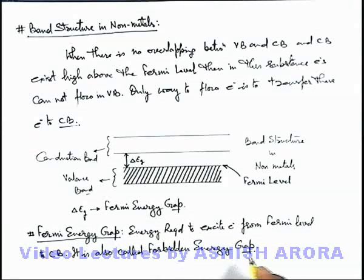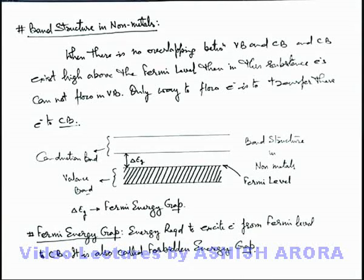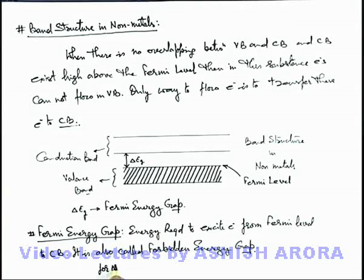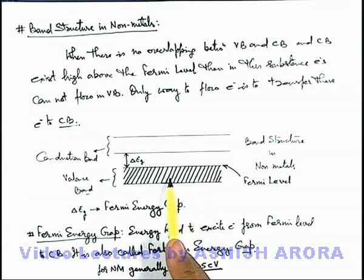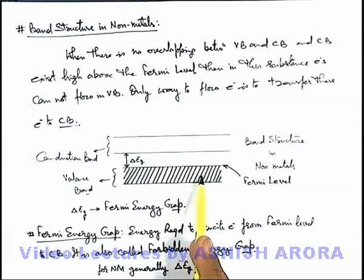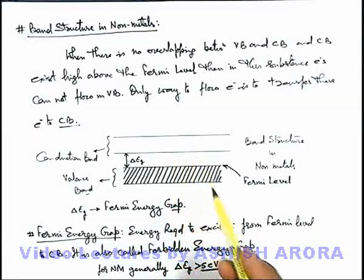Just be careful about the basic terminology and band structure and how it exists in the case of a non-metal. For non-metals, the Fermi energy gap ΔEg is generally more than 5 electron volts. This is such a high energy that it requires very high temperature to be attained by electrons at the Fermi energy level. So at normal temperatures, electrons at the Fermi level will not transfer to the conduction band, because at normal room temperature this much energy is generally not obtained.